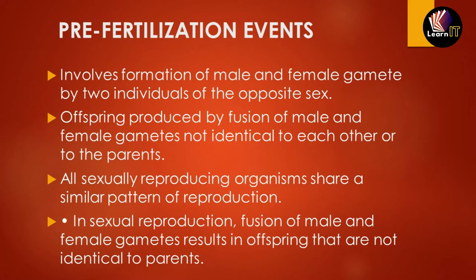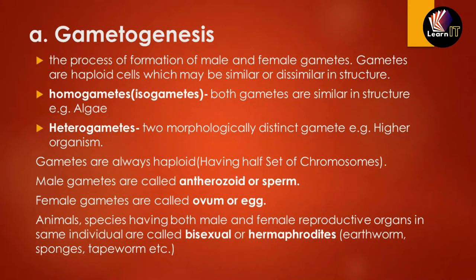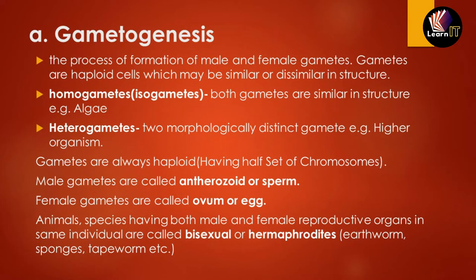Pre-fertilization events are divided into two categories: gametogenesis and gamete transfer. Gametogenesis is the process of formation of male and female gametes. Gametes are haploid cells — haploid means a single set of chromosomes — which may be similar or dissimilar in structure depending on the organism. There are two types: homogametes, also known as isogametes, where both gametes are similar in structure, seen in the case of algae only.